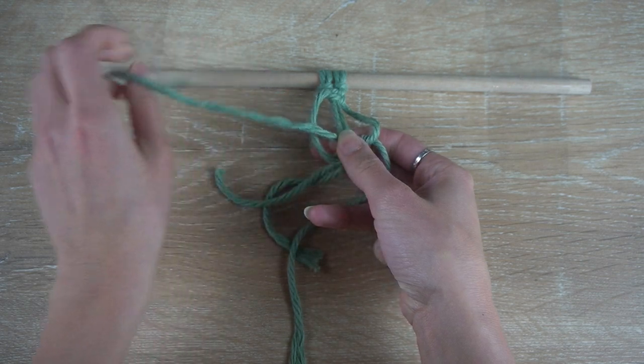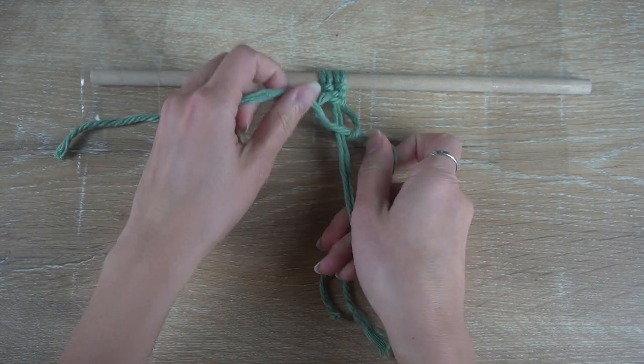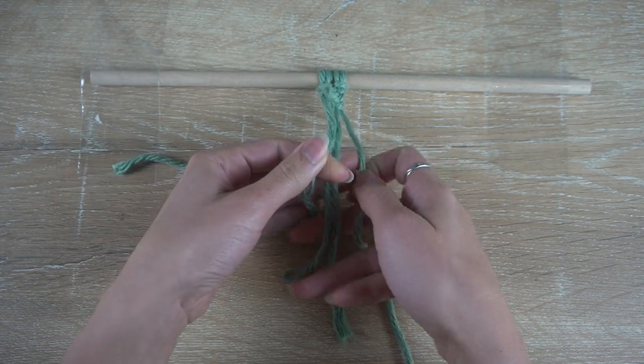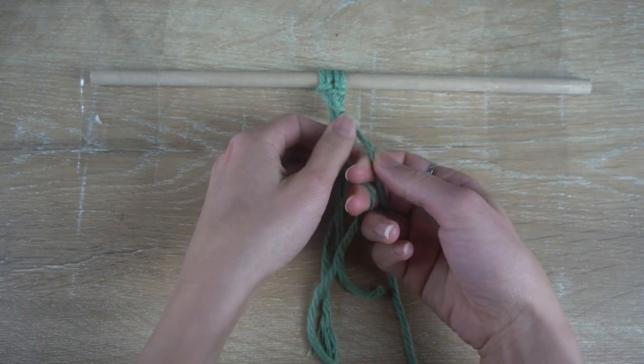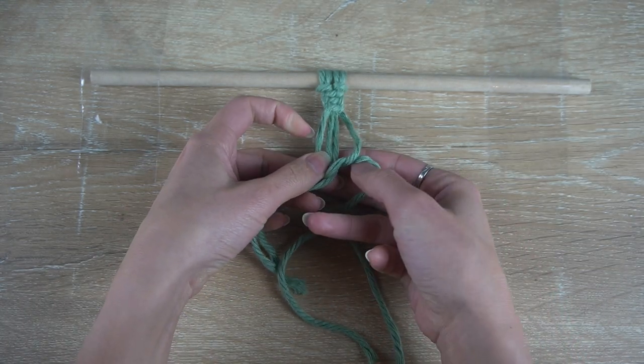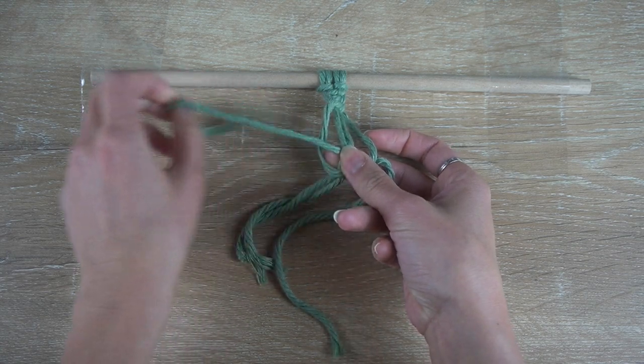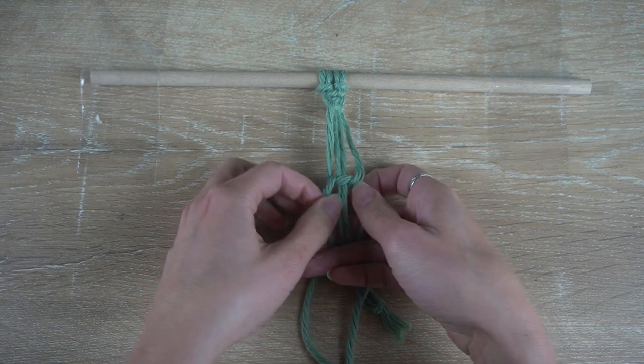If you want to make a left-facing half knot, you just have to start with the opposite cord. So, folding the right cord over to the left, and then taking that left cord back and through on the right. This knot is great for adding tassels.